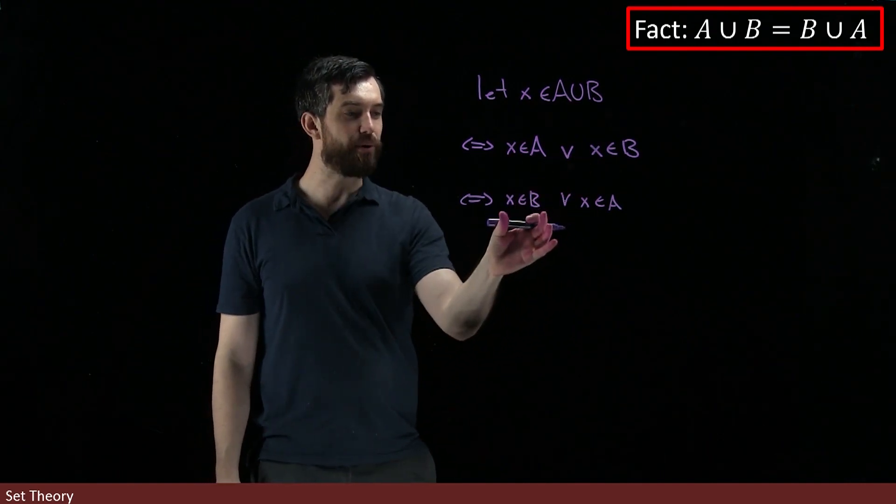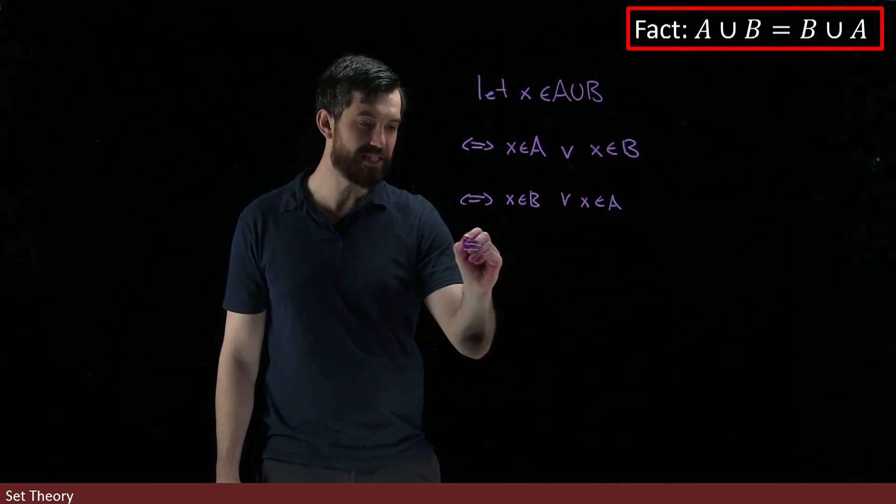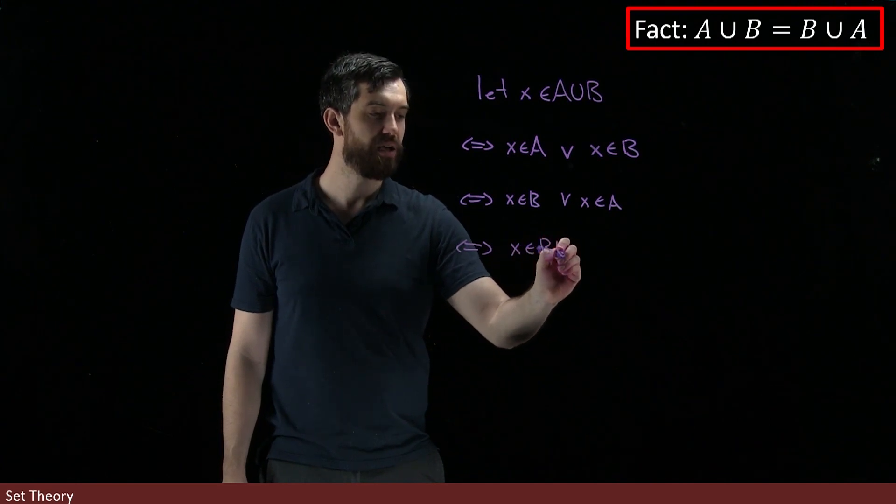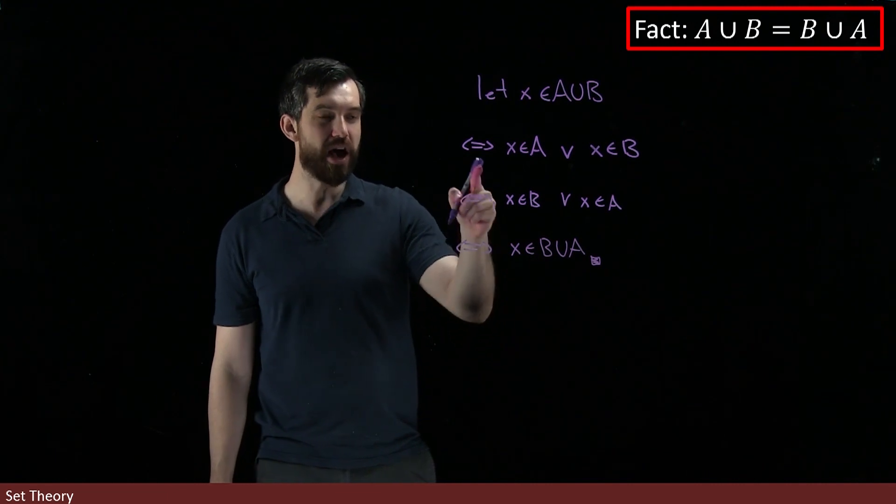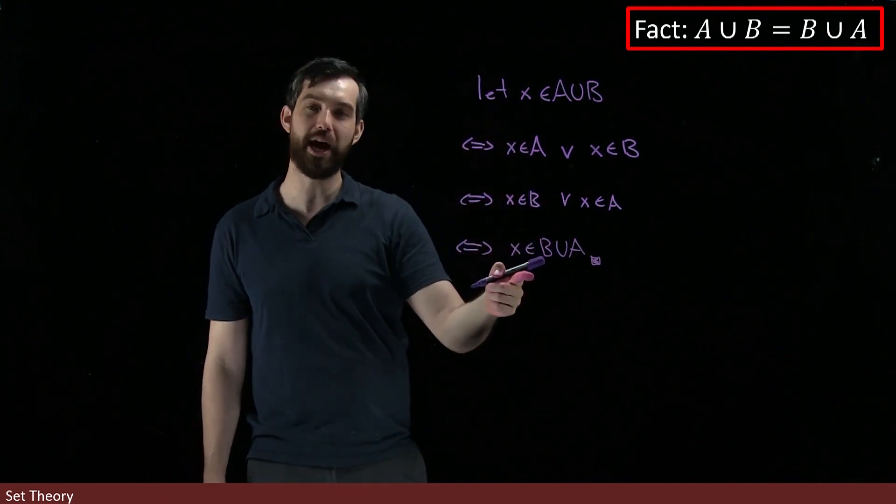And then I can go backwards. X in B or X in A, this is precisely the same thing as saying that X is in B union A. And so I have a chain of if and only ifs, and I get if I start in A union B, I end up in B union A.